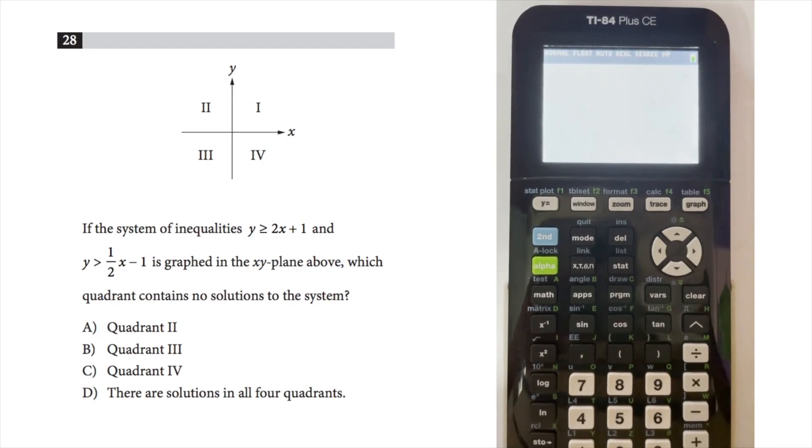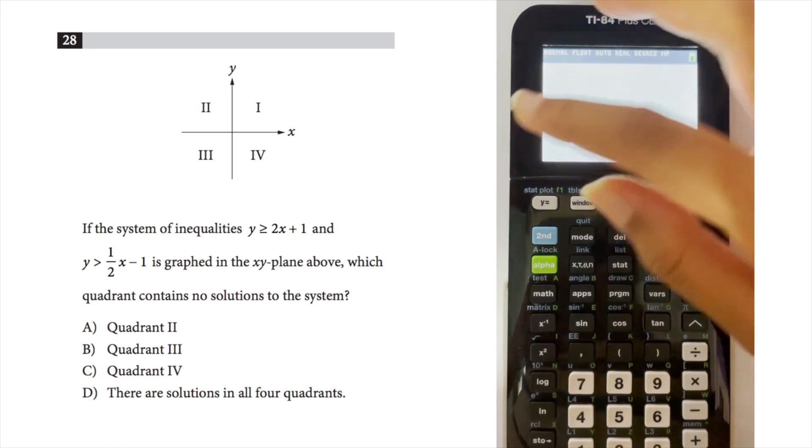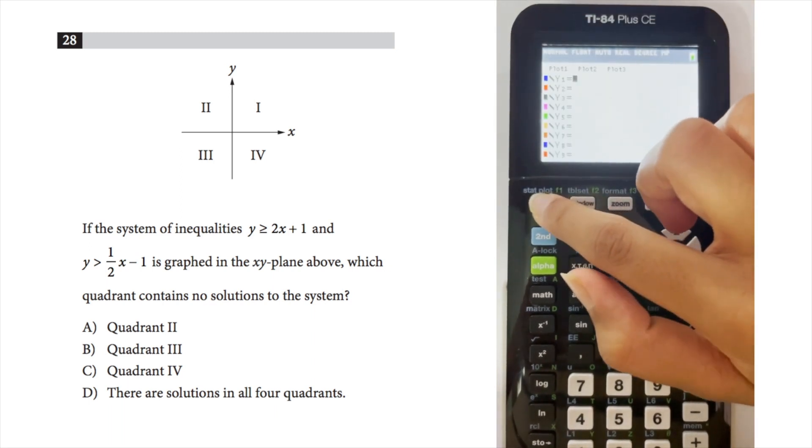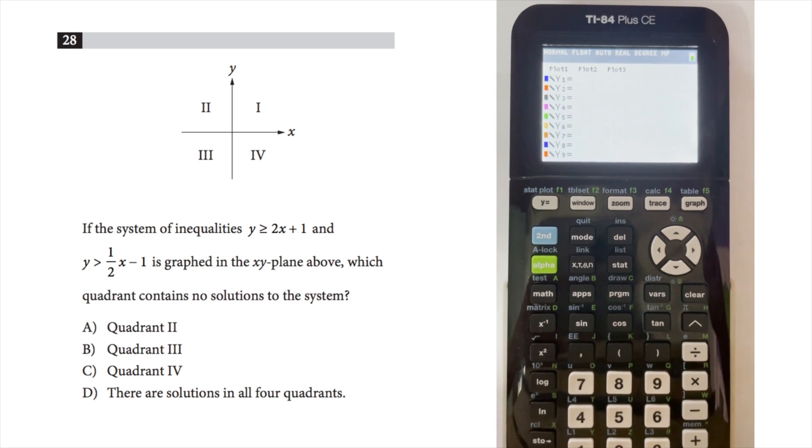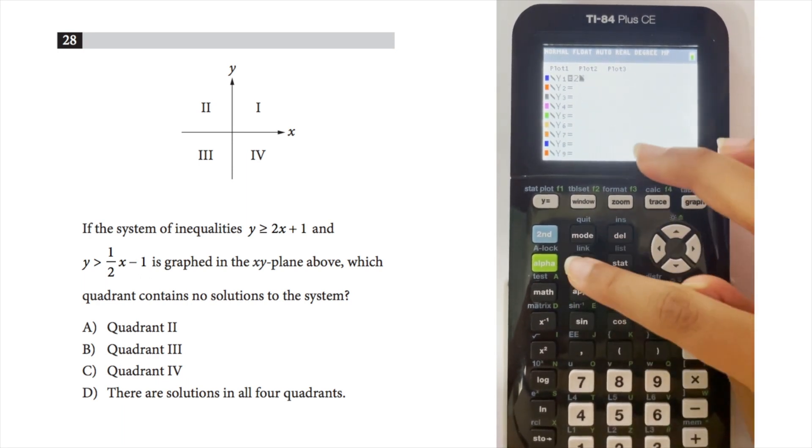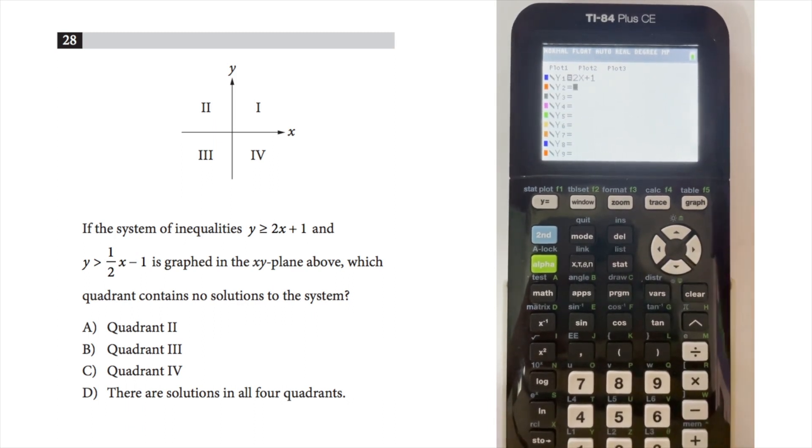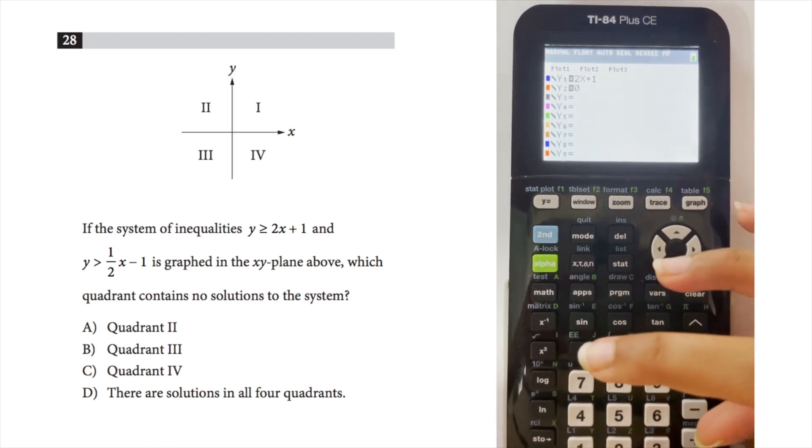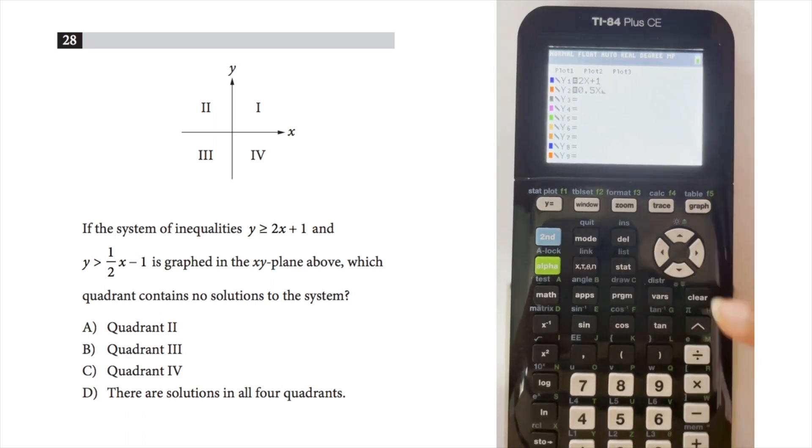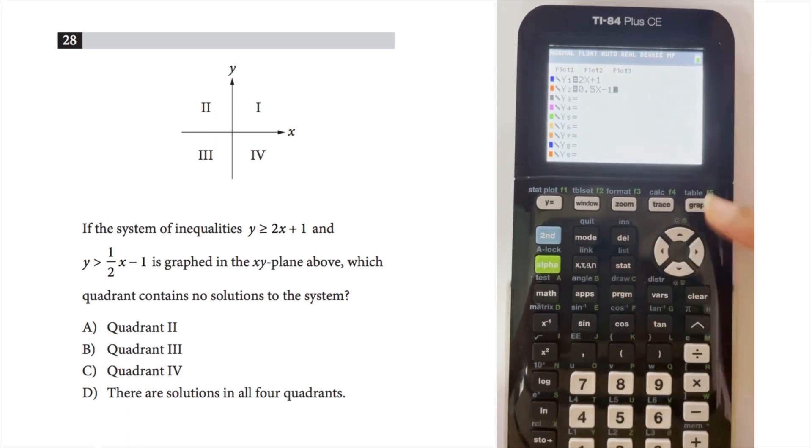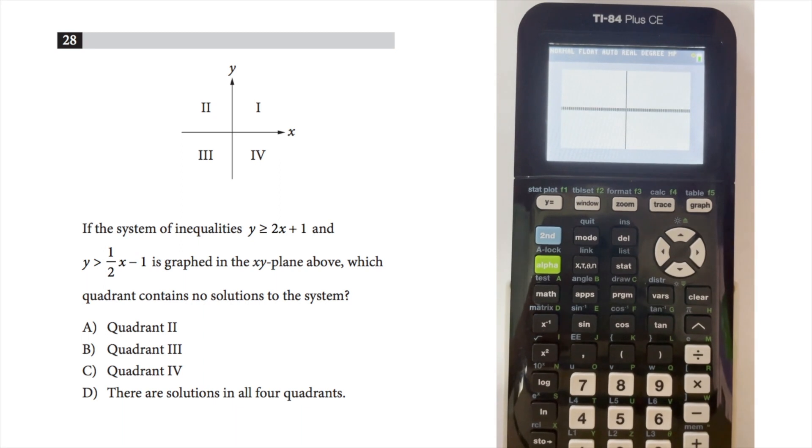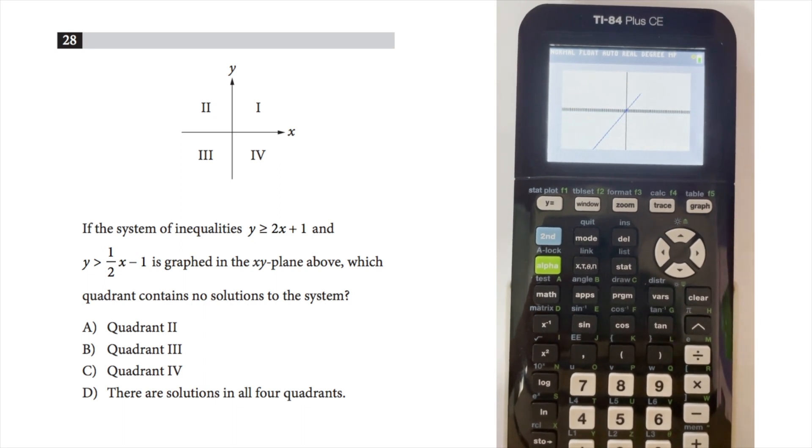For example, the question on the left would take a long time to solve manually, but with this calculator, I can simply enter both equations in the y equals function. So in equation 1, I write y equals 2x plus 1. In equation 2, I write y equals 0.5x minus 1. Now, I simply press graph, and this displays both equations for me on the screen.